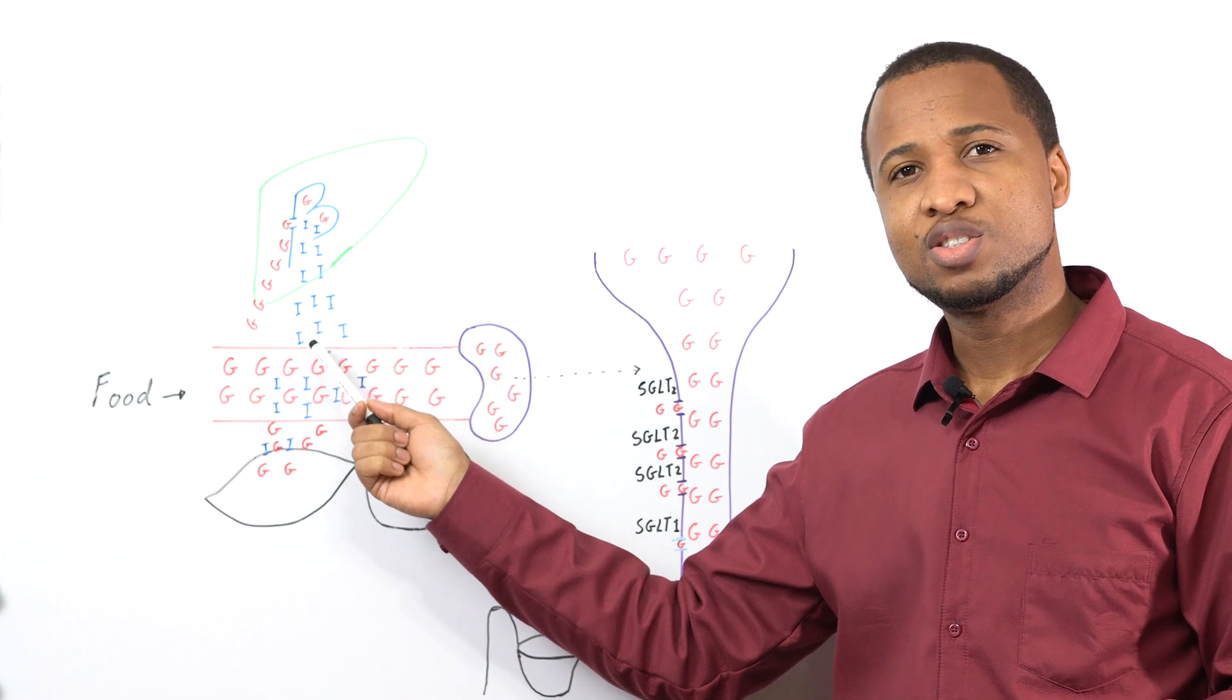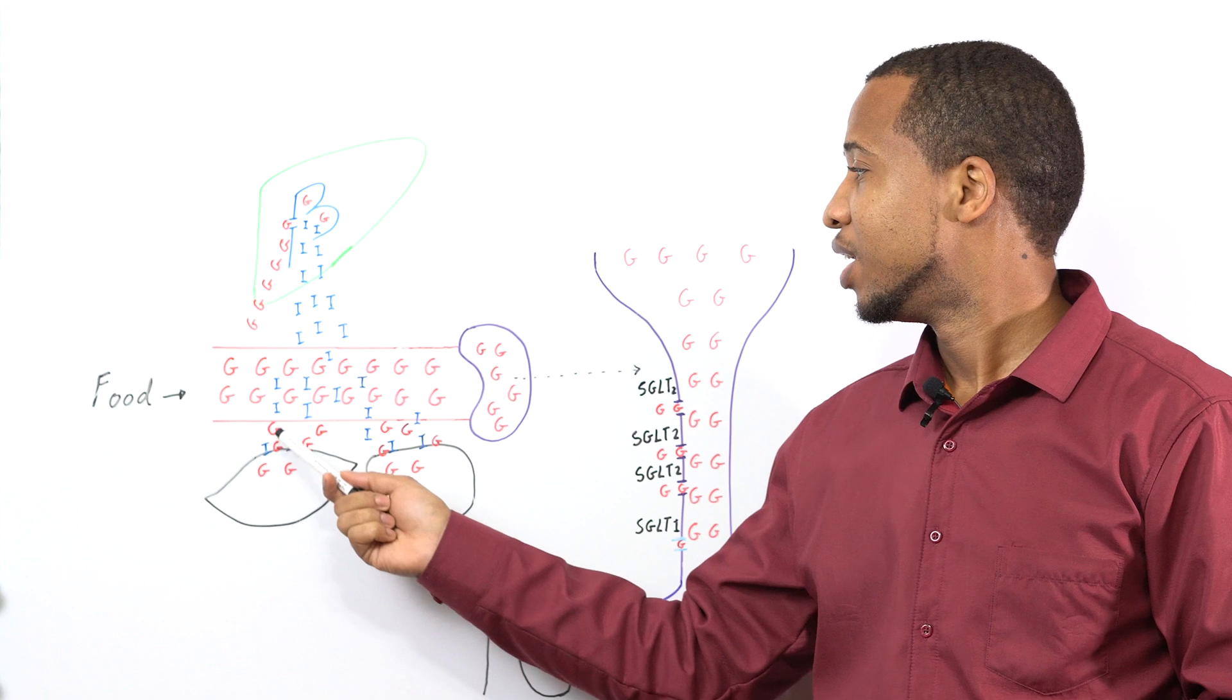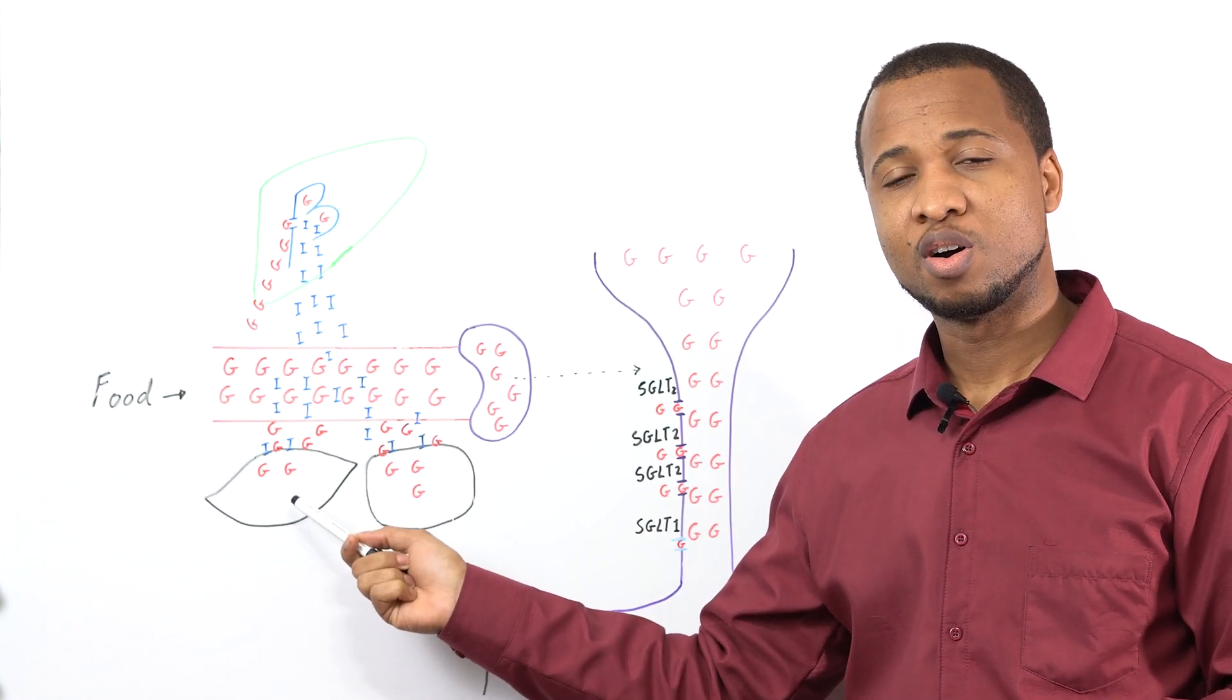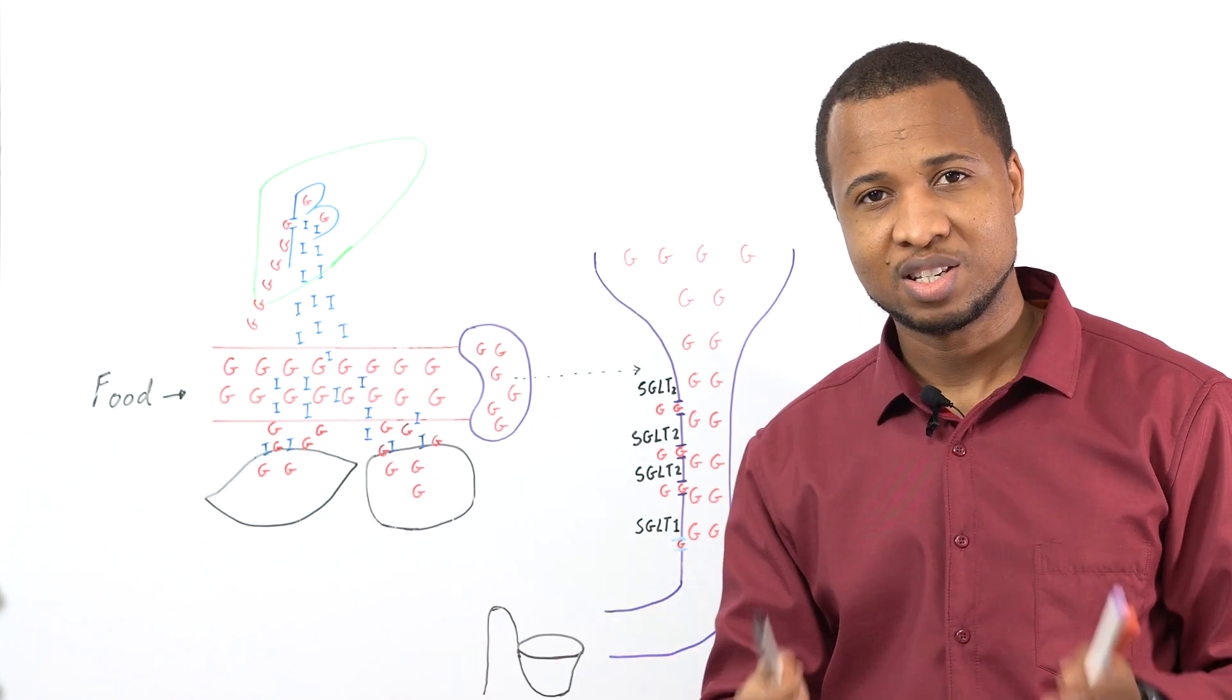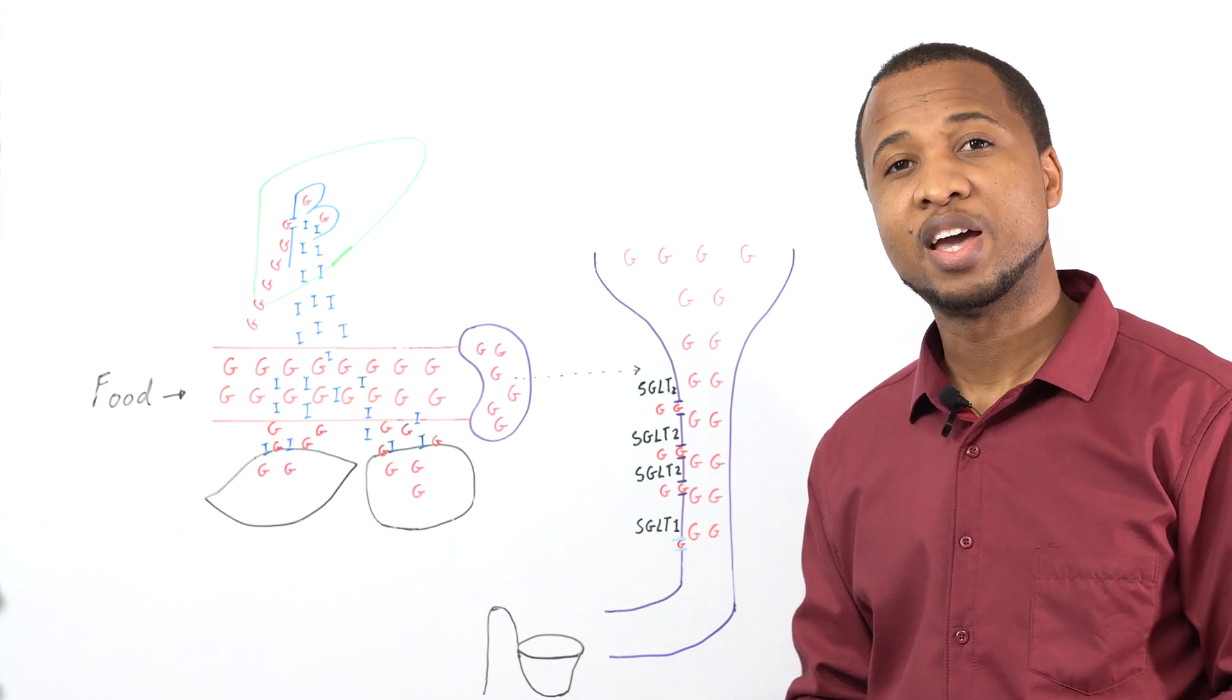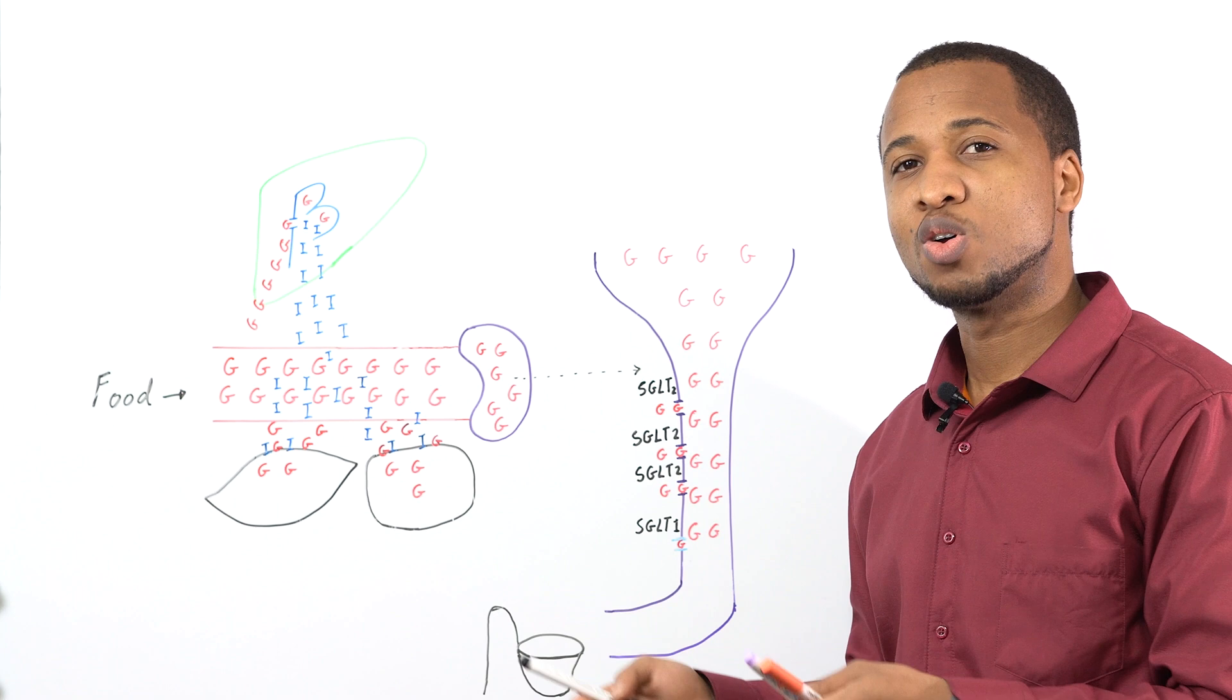Then this insulin gets attached to different cells, especially muscle cells and fat cells, and tells the cells to bring the transporters of glucose to the membrane so that this glucose can get into the cells. Inside the cells they can be used for energy, they can be stored as glycogen, or they can be stored as fat.